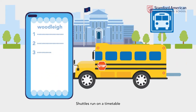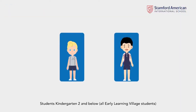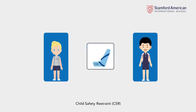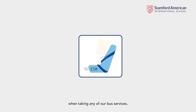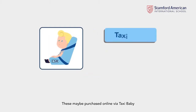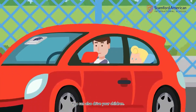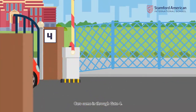Shuttles run on a timetable and registration is required. Students Kindergarten 2 and below are required to have a Stamford-approved Child Safety Restraint when taking any of our bus services. These may be purchased online via Taxi Baby or other CSR outlet. You can also drive your children — cars come in through Gate 4.